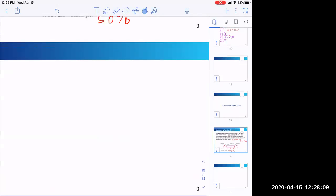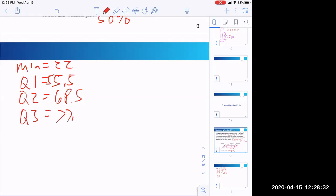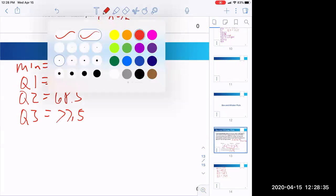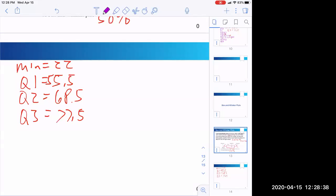Our five number summary was the min was 22. Quartile one 55.5. Quartile two, the median, 68.5. Quartile three 77.5. And max 99.